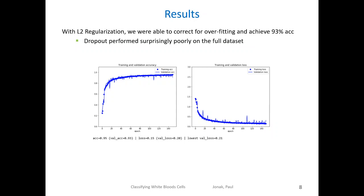When we move from the medium dataset to the full dataset, three things happen. First, dropout performs very poorly in comparison to L2 regularization. Second, with L2 regularization, our validation accuracy passes 93 percent even before full convergence. And lastly, the validation loss plot on the right indicates that overfitting has been thoroughly addressed. We are quite pleased with these results as a first pass.